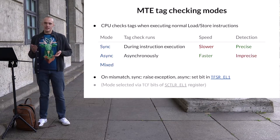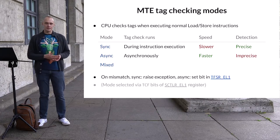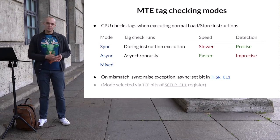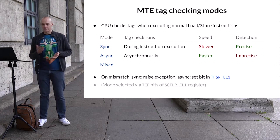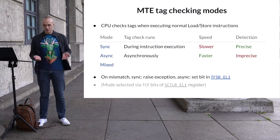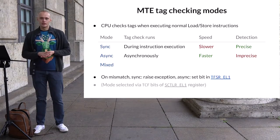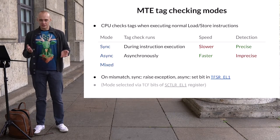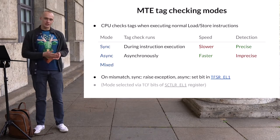Another mode is the asynchronous mode, or async. In this mode, instead of waiting for the tag check to complete, the CPU goes on and the check is executed asynchronously. In the async mode, when the CPU finds a tag mismatch, it sets an exception bit in one of the system registers, which is then supposed to be checked manually. Compared to the sync mode, the async mode is faster — it doesn't make the CPU wait. The disadvantage is that the CPU is unable to point out the exact instruction that causes an exception.